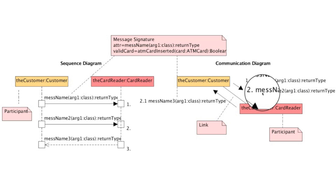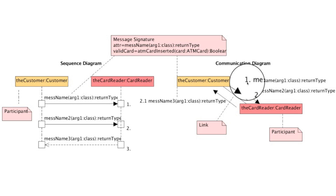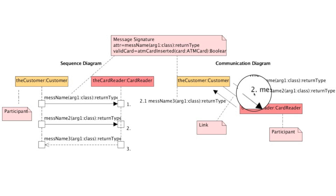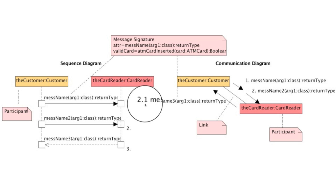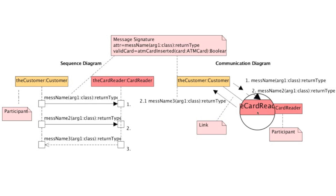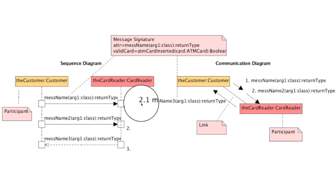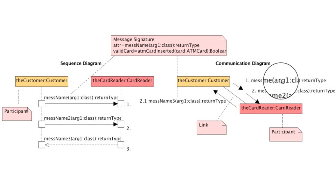I'm going to show you this in detail, but as you can see here, whenever you create your first message you're just going to put a number. The second message just increments that. However, once you hit a new participant, you then add an additional number on the end. And if we continue to send additional messages from that participant, we would increment this second number while leaving the first number as it is. So: the links, the participants, the messages, and the message numbers.